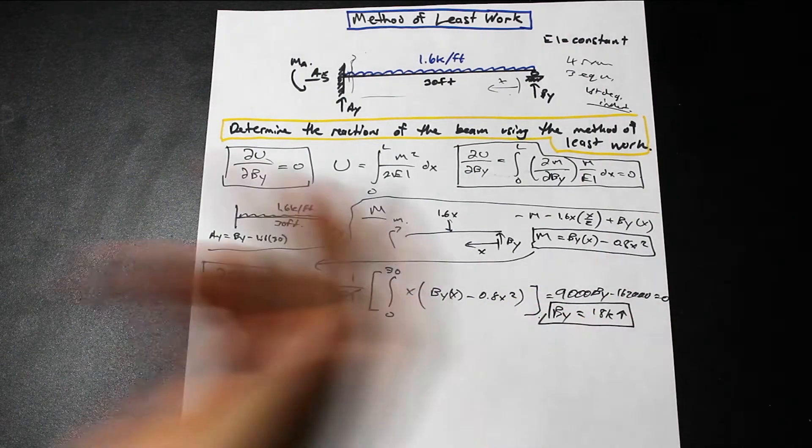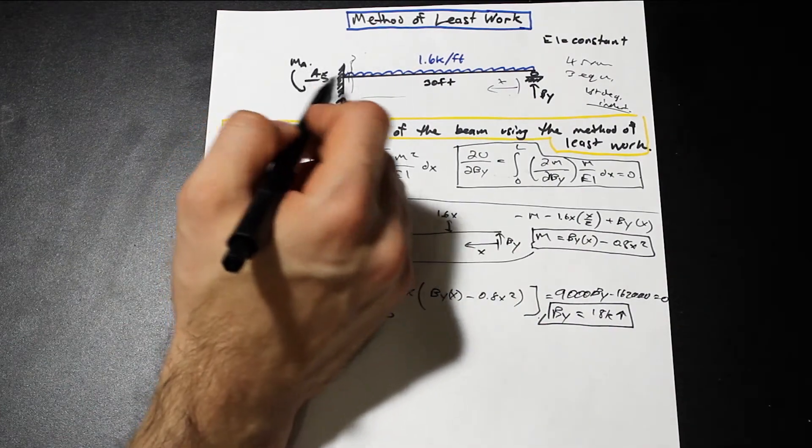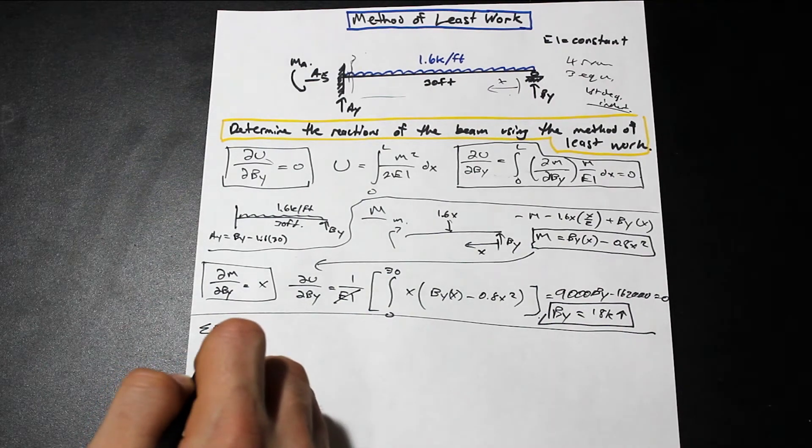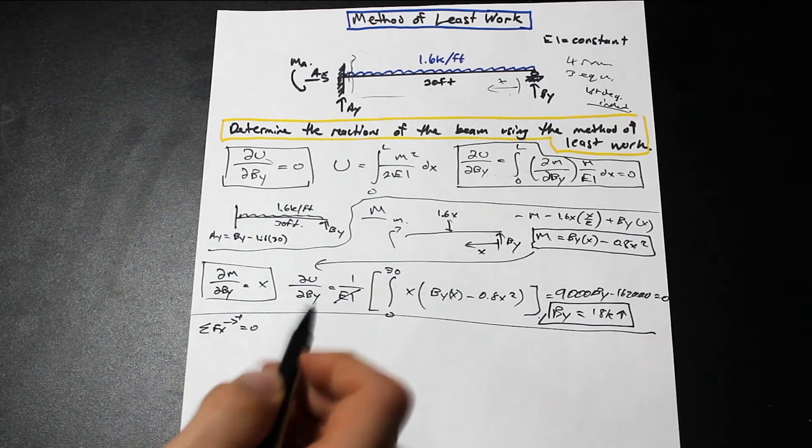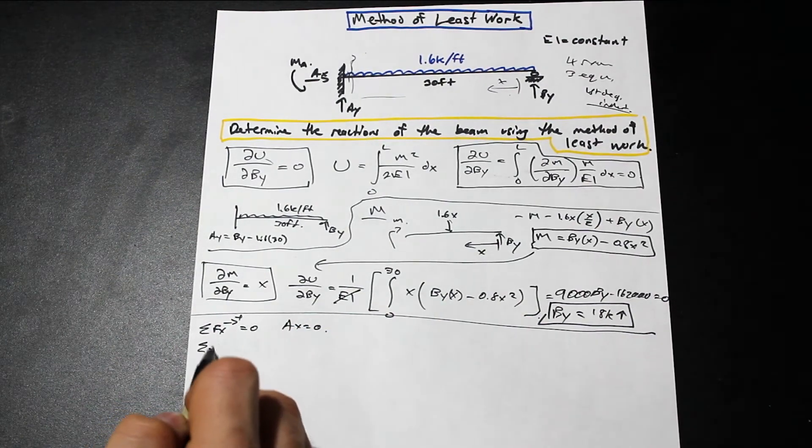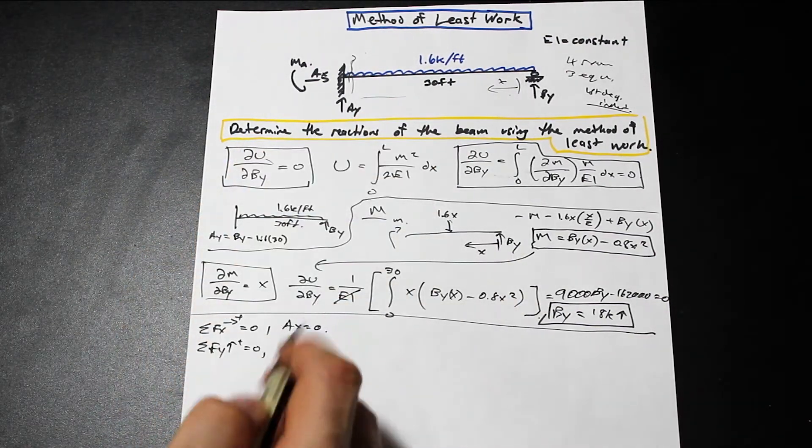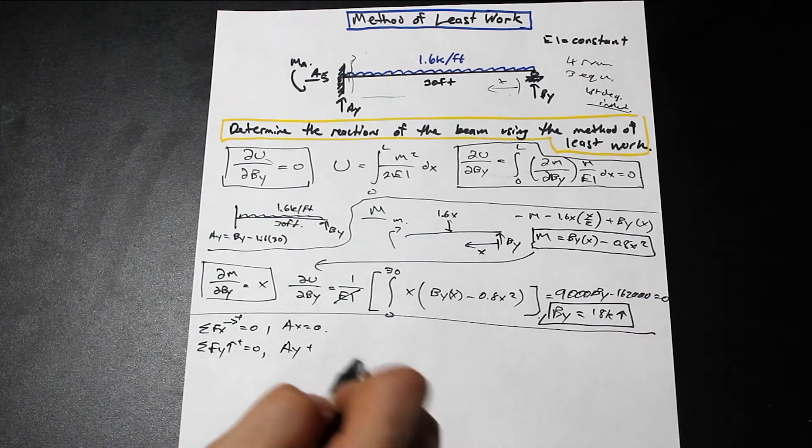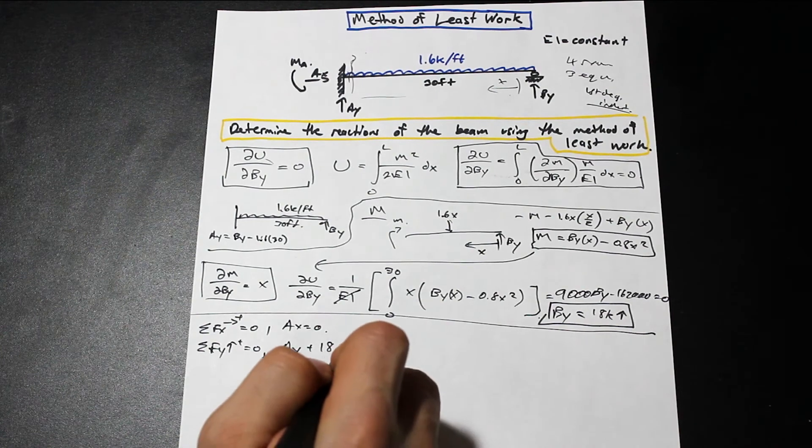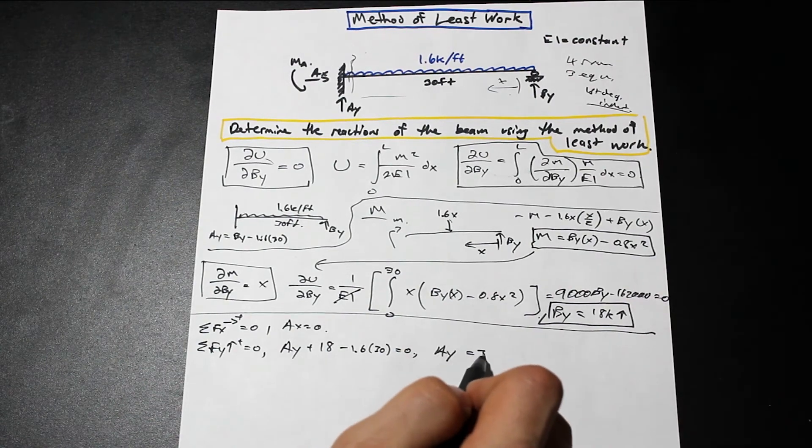So now that we have BY, as you can see, we can go ahead and we can solve for our reactions. So what's our AX? So now we can just take the forces. So if we take the forces in the X direction, we can just see that AX is equal to 0. There's no other forces in X. If we take the forces in the Y direction, we're going to have AY plus BY, which is 18, minus 1.6 times 30. That's equal to 0. AY is simply just going to be 30 kip.